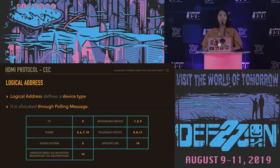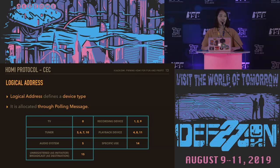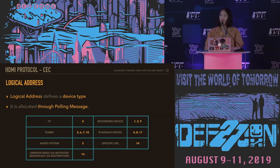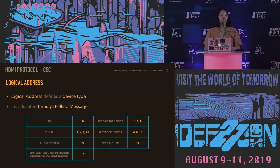The logical address defines a device type. For example, TV is 0, and a recording device is 1, 2, or 9 depending on the device type. The logical address is allocated through a polling message. The device takes the first candidate address and sends a polling message — for a recording device, it starts with 1. If the polling is acknowledged, it takes the next address, which would be 2. If not acknowledged, it stops the procedure and retains that address, so its logical address becomes 1.